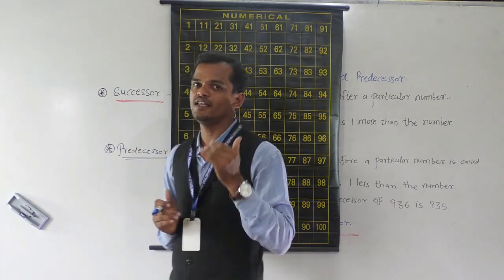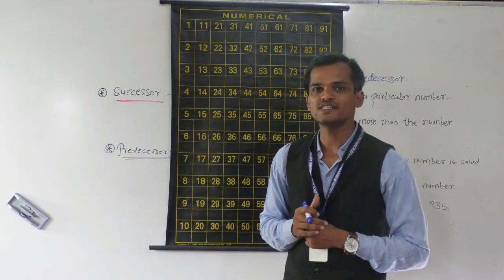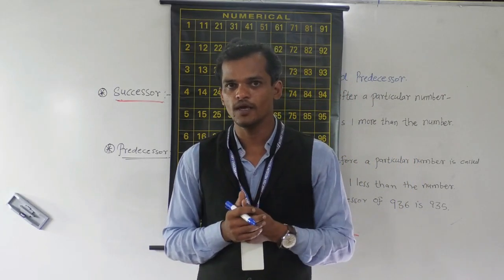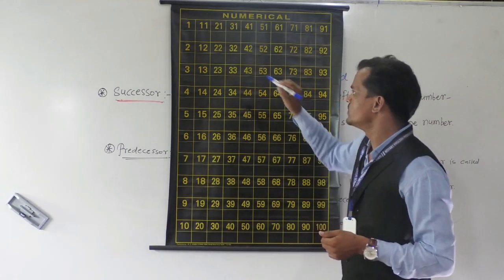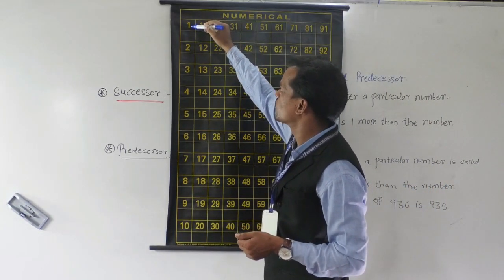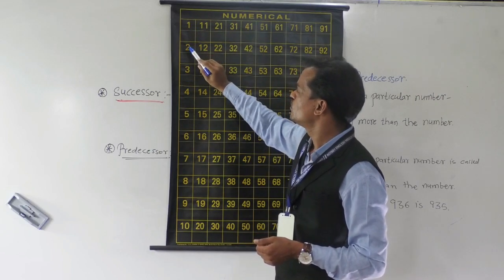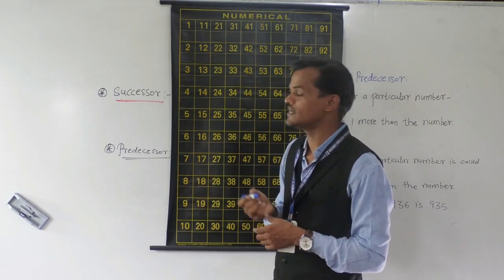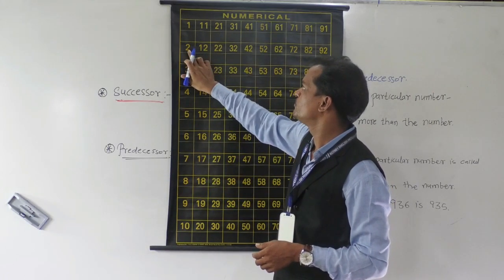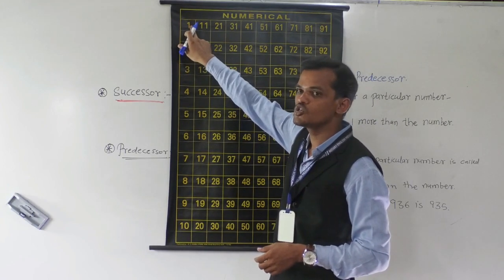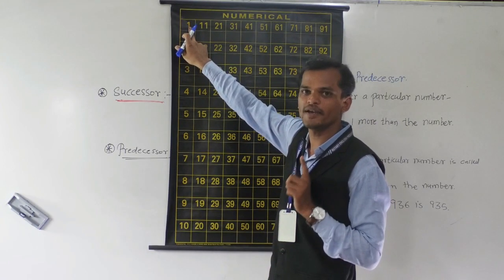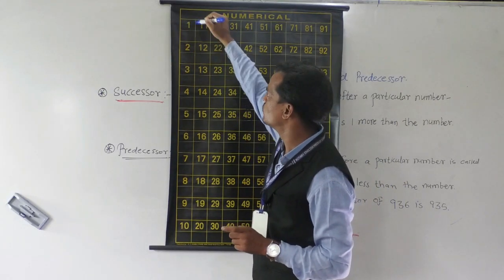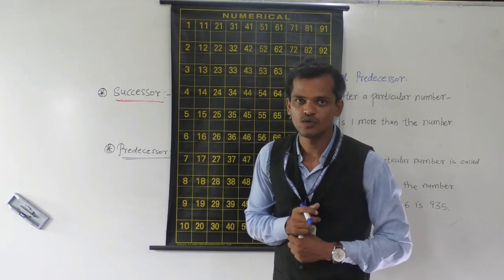Now, in our previous standard we have seen the backward number or before number. You can observe here: 1, 2, 3, 4 — which is the before number or the predecessor of 2? Just before 2, the number 1 comes. So 1 is the predecessor of 2, and this 1 is 1 less than 2.